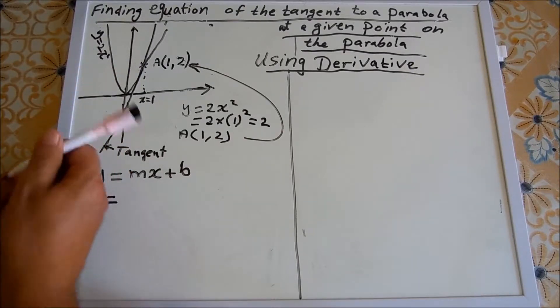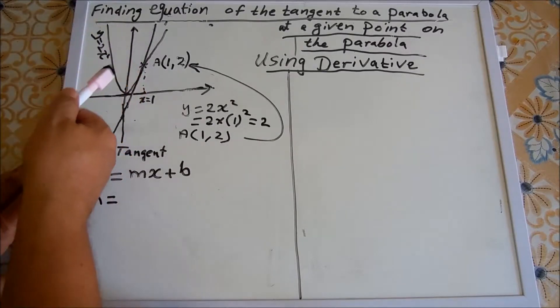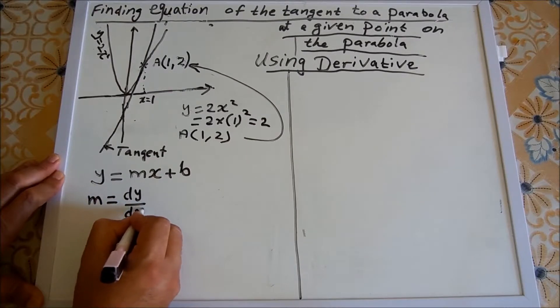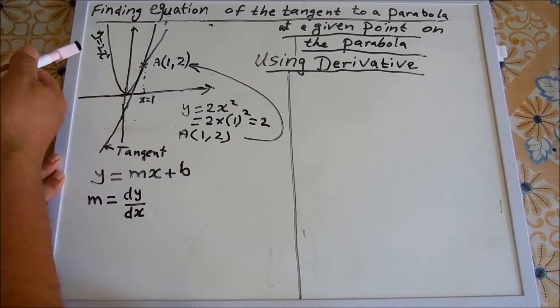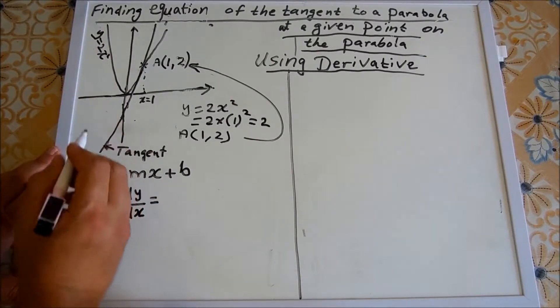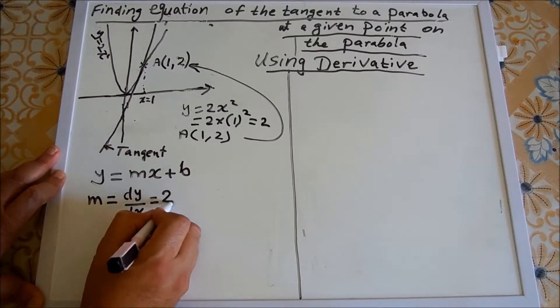Or the derivative of the function y equals 2x squared at point A. So it's dy/dx for the function 2x squared. And as you know, the derivative of y equals 2x squared is...